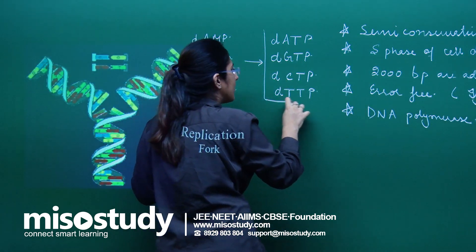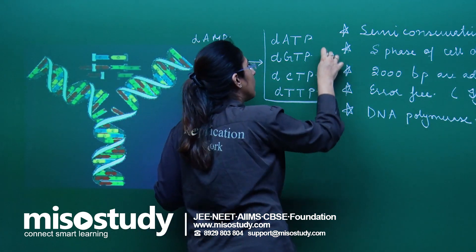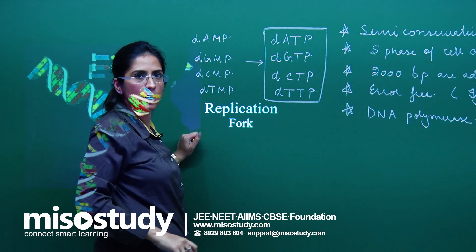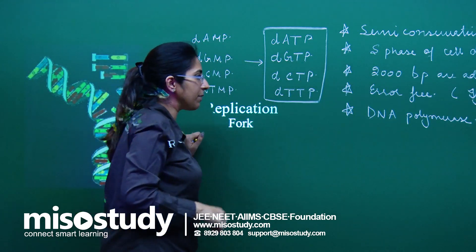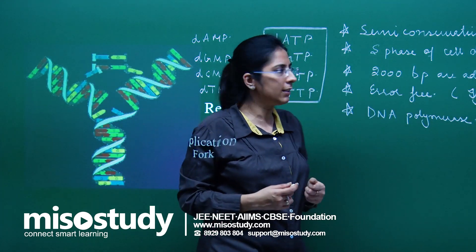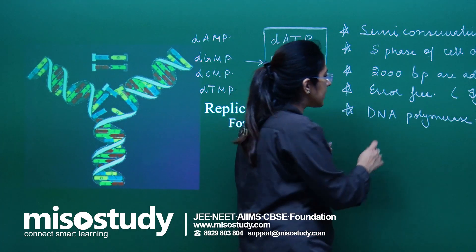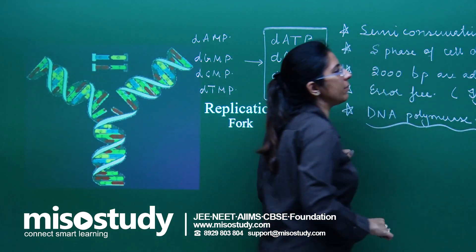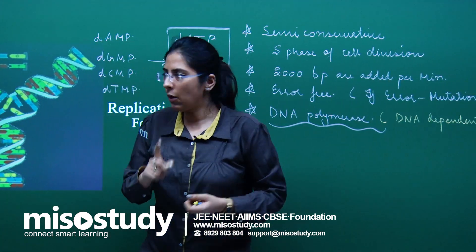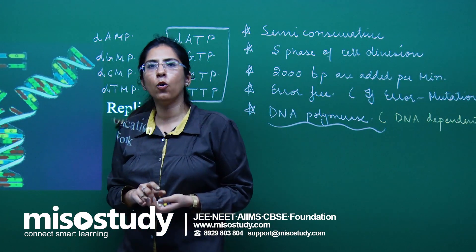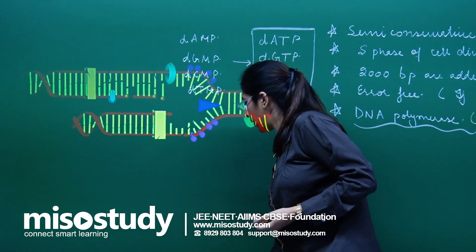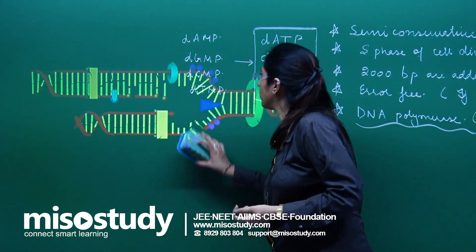The two prerequisites required are: first, these nucleotides, because we want to add them one after another; and second, DNA polymerase. These are the two most important things for the replication process.